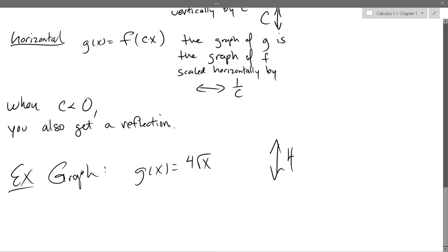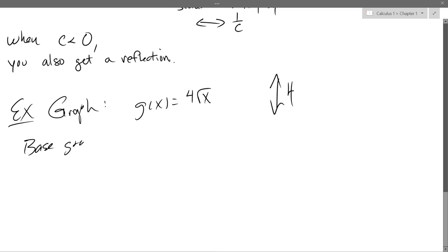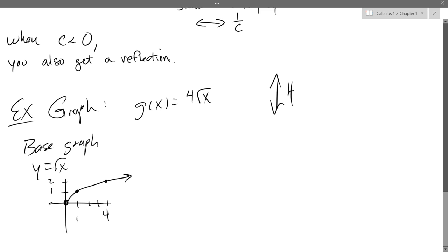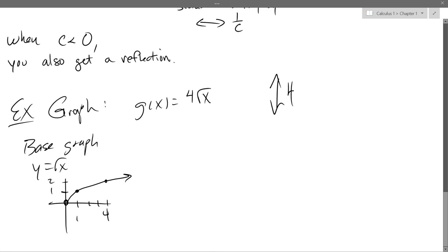We know our original base graph, y = √x. We'll do a quick recreation. We want to stretch it by 4. Think about pulling the graph away from the x-axis. The easy way: take all your y-coordinates — 0, 1, and 2 — and multiply by 4. That gives 0, 4, and 8. So it's going to get a whole lot taller.